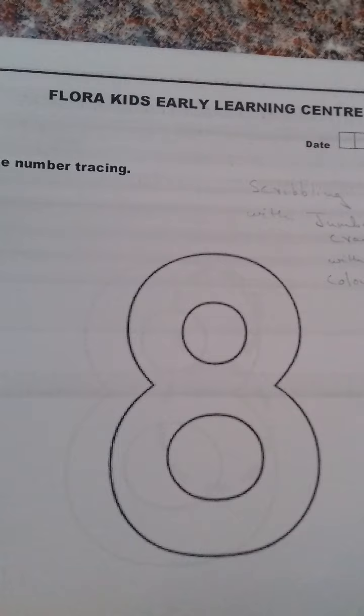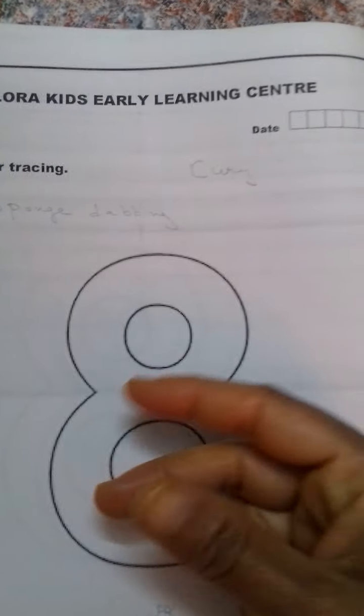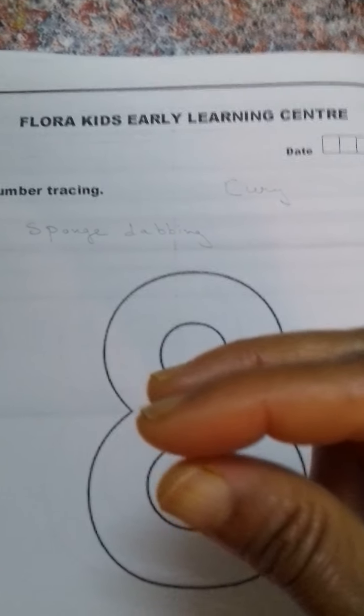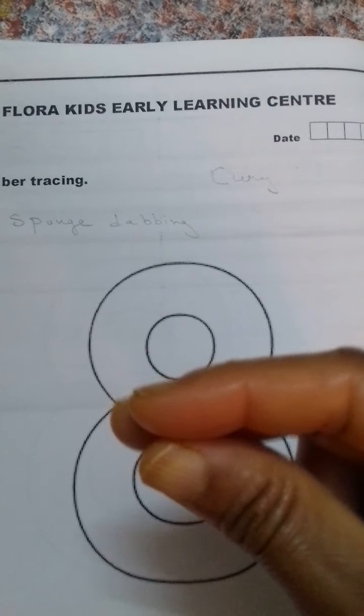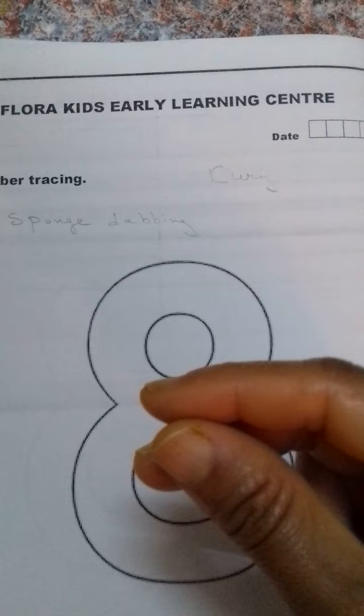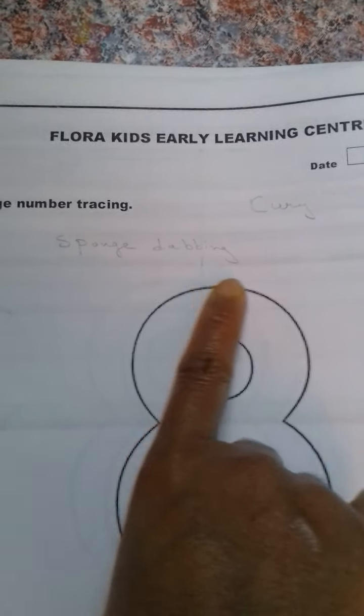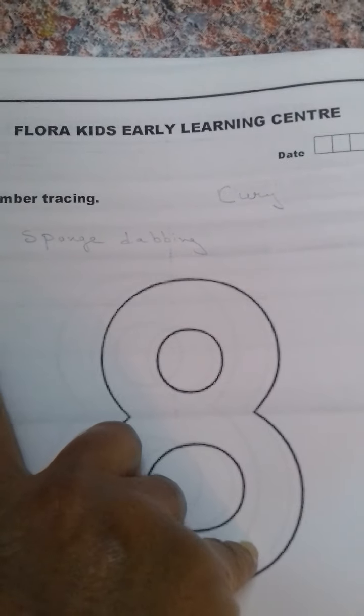Again you can give scribbling activities. The more the child does scribbling and colouring activities, the child's fine motor skill develops or his small muscles in the fingers strengthen. Then comes sponge dabbing - you can give a piece of sponge and ask the child to dip in watercolours and dab.